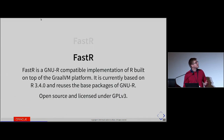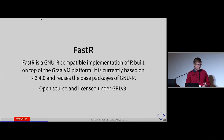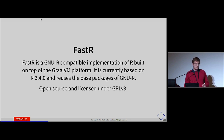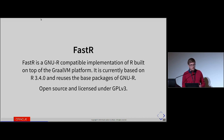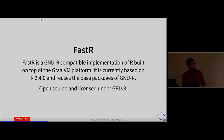Let's take a look at FastR. It's a GnuR-compatible implementation based on something called Graal, which I will explain shortly. It's currently based on R 3.4 — we will migrate to R 3.5.1 after the conference. Based on R 3.4 means we are reusing the base packages from GnuR, but the core of the engine is a clean-room implementation. So it's not a fork of GnuR; it's a completely different project, but we are reusing parts of GnuR, especially the standard library. This is all open source and licensed under GPLv3.